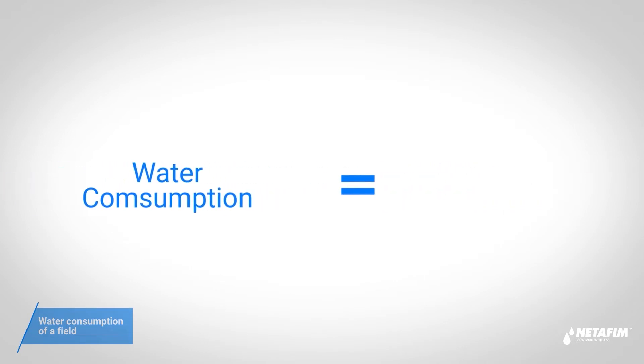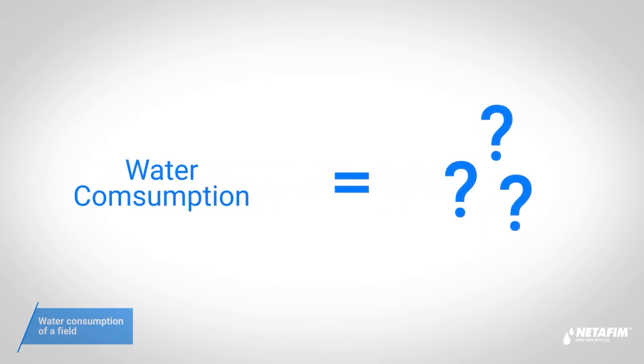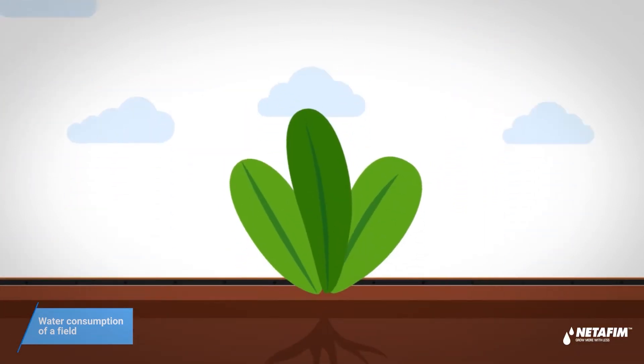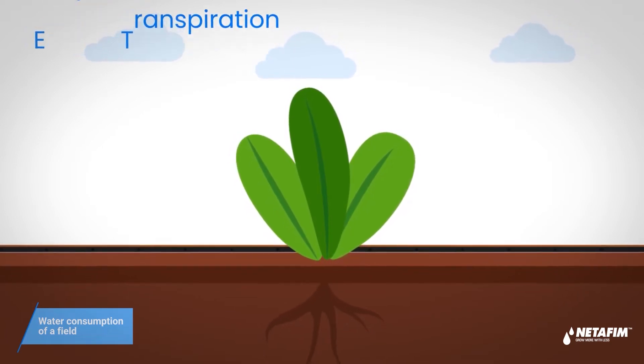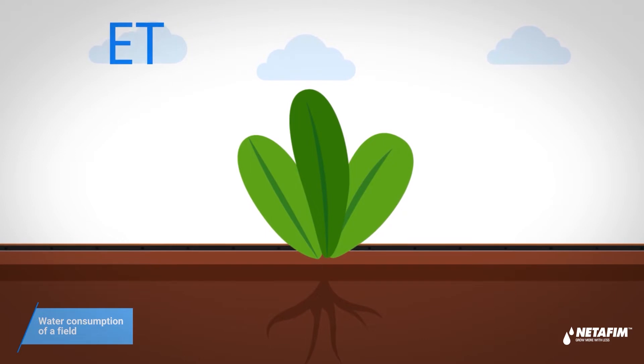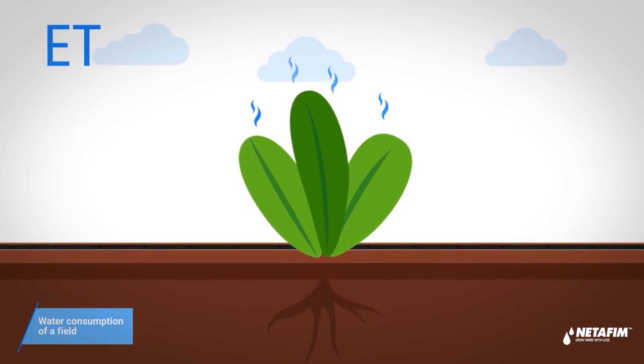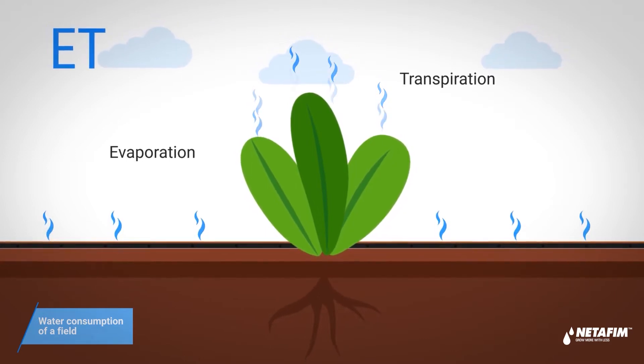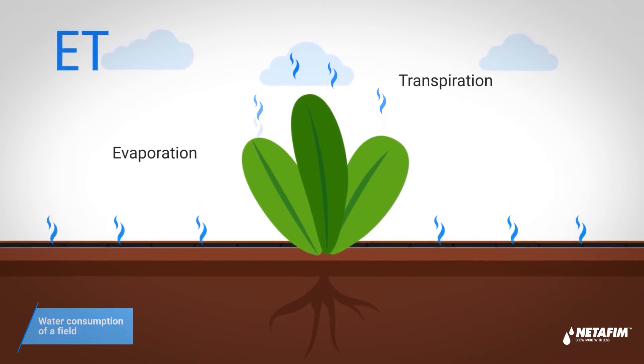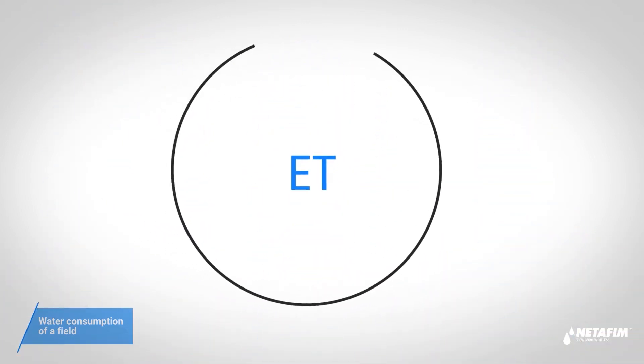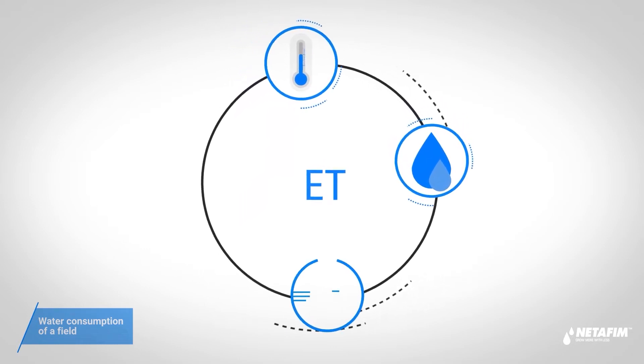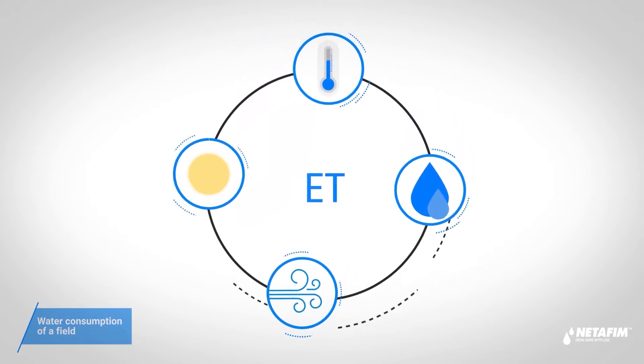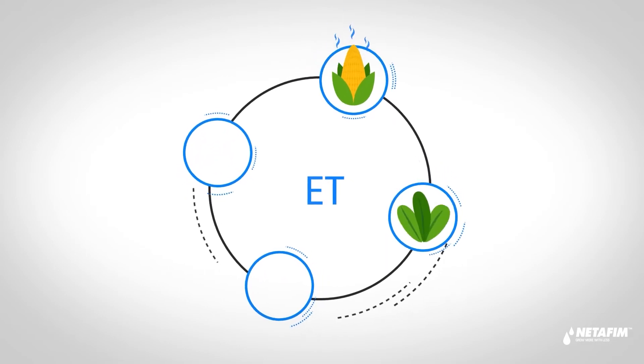The water consumption of a field is called evapotranspiration, or ET for short. ET is the sum of water that the plants consume by transpiration along with evaporation from the soil. ET is calculated based on meteorological data considering temperature, humidity, wind speed, and radiation. But every plant will transpire a different amount of water.